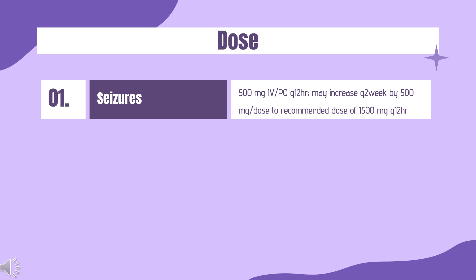Partial Onset Seizures: Need for oral loading dose not established. Immediate Release (Keppra): 500 mg PO Q12HR; may increase every 2 weeks by 500 mg per dose, not to exceed 3,000 mg per day. Extended Release (Keppra XR or Elepsia XR): 1,000 mg PO once daily; may increase every 2 weeks by 1,000 mg per day, not to exceed 3,000 mg per day. Also: 500 mg Q12HR; may increase every 2 weeks by 500 mg per dose, not to exceed 3,000 mg per day.